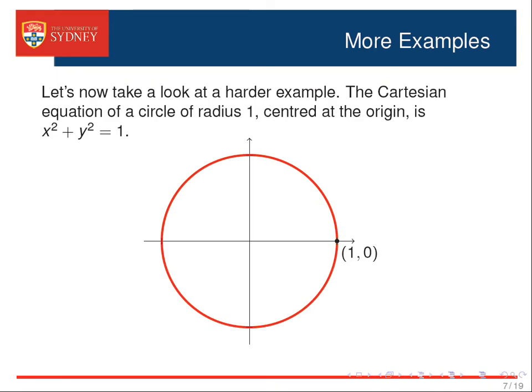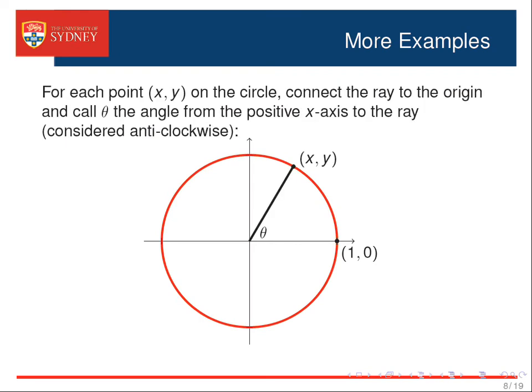Let's now look at a more difficult example. We start by looking at the unit circle centered at the origin, whose Cartesian equation is x squared plus y squared equals 1. For each point x, y on the circle, connect the ray to the origin, and let us call theta the angle from the positive x-axis to the ray, considered anti-clockwise.